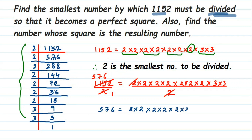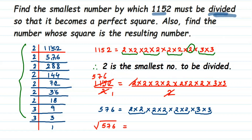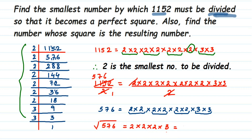Now forming pairs: 576 = (2×2) × (2×2) × (2×2) × (3×3). You can see there is proper pairing — every factor has a pair. So 576 is a perfect square number. To find the square root of 576, from each pair you pick one factor: one 2 from the first pair, one 2 from the second, one 2 from the third, and one 3 from the last pair. Multiply them: 2 × 2 × 2 × 3 = 24. So the square root of 576 is 24.